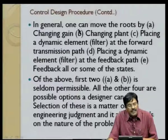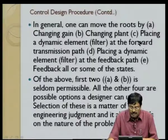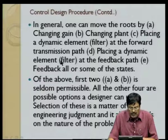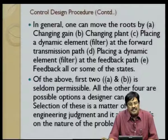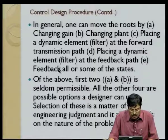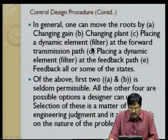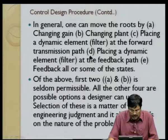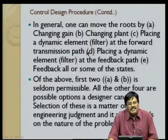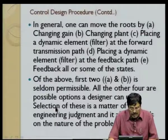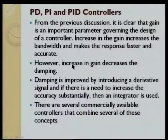Methods to move poles include: changing the gain, changing the plant, placing dynamic elements in the forward transmission path such as filters, placing a dynamic filter at the feedback path, or feeding back all or some of the states. It is generally not possible to change the plant. Selection among the remaining options is a matter of engineering judgment and depends on the nature of the problem.